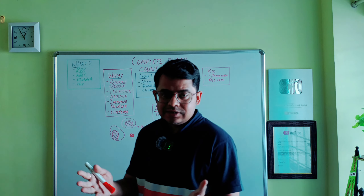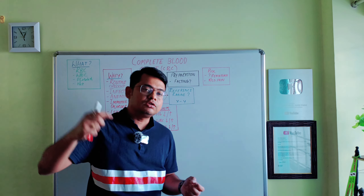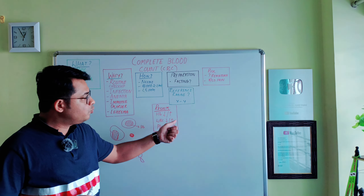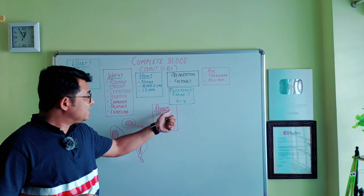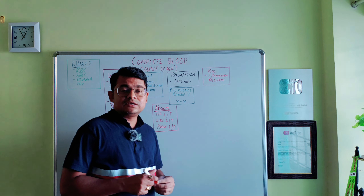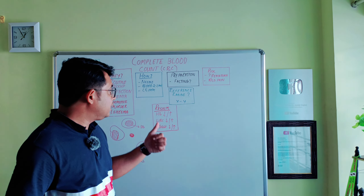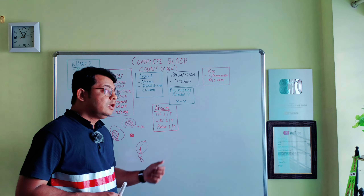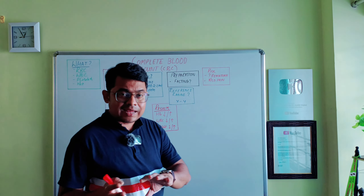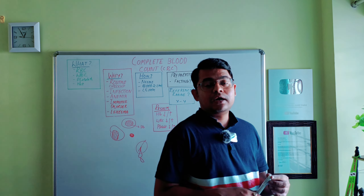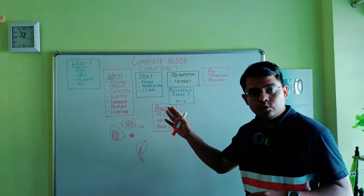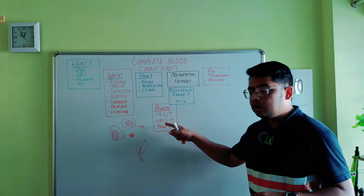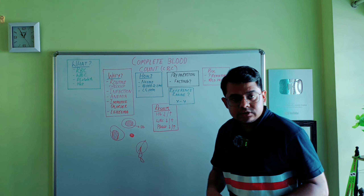Now for results interpretation. If hemoglobin is low, there is anemia, which may be due to many causes. The most common causes include iron deficiency, vitamin B12 deficiency, folate deficiency, thalassemia, autoimmune hemolytic anemia, and many other conditions.